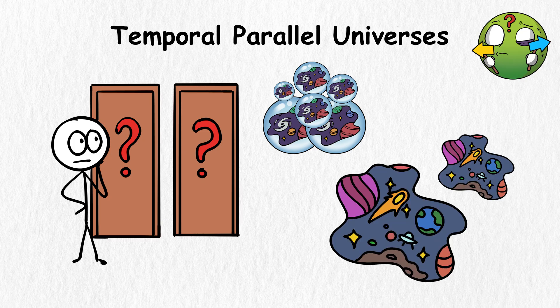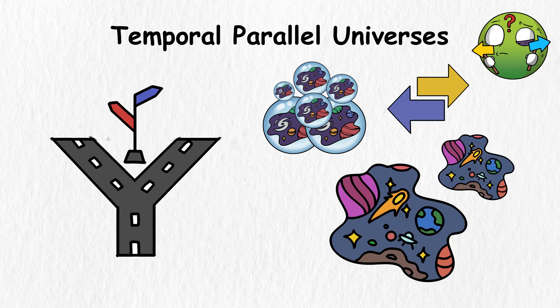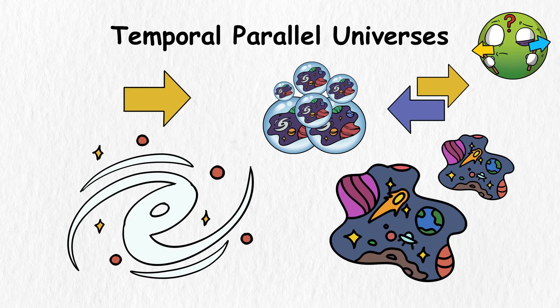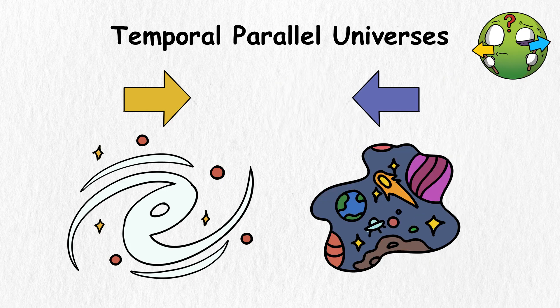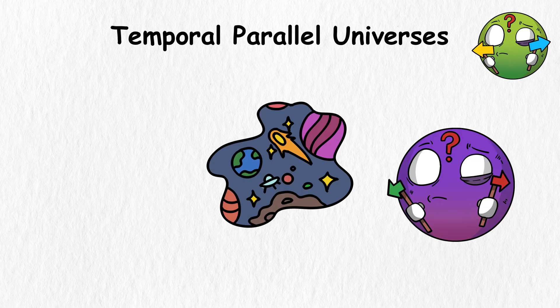So you create two new universes when choosing to turn left or right at a crossroads. In one universe, you go right. Meanwhile, in the other universe, you go left. These new universes are Temporal Parallel Universes.